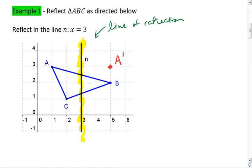B is two spaces away. So we're going to put B directly across on the other side of the yellow line. And we'll label that B prime. C is only one space away, so we'll move C one space away on the opposite side.